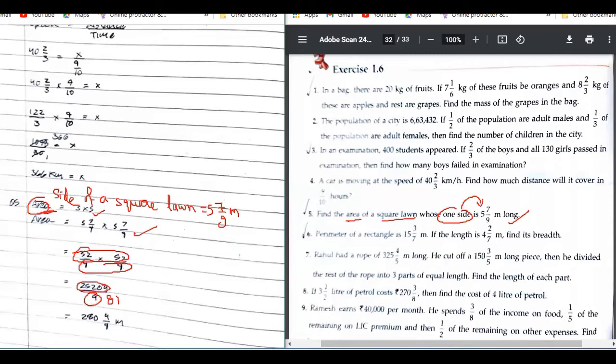Okay, just check right now. Yeah, so what is 52 into 52? 2704 upon 81. And after solving it, what you will be getting...